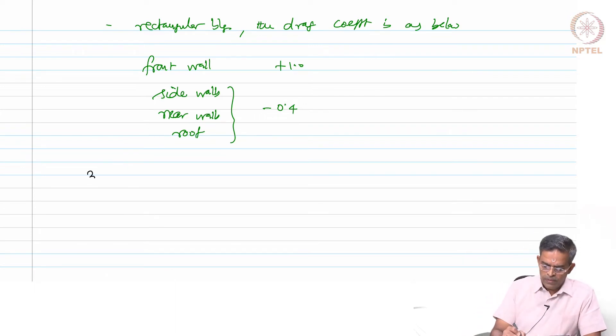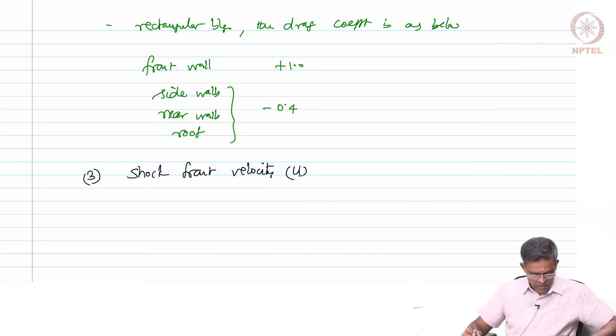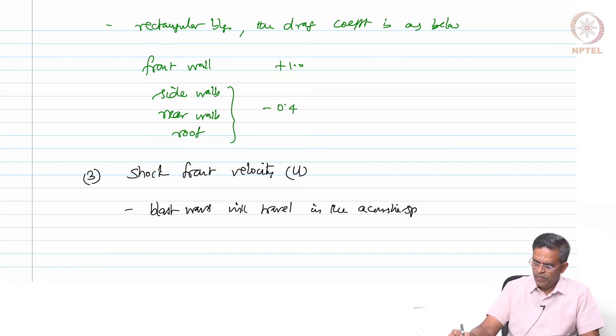Let us talk about the third parameter which is shock front velocity, indicated as u. In a free field, the blast wave originated from an explosion travels either at the acoustic speed or above the acoustic speed in a propagating medium. So in general, blast waves will travel in the acoustic speed of the medium or sometimes even at the higher speed.